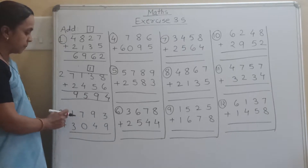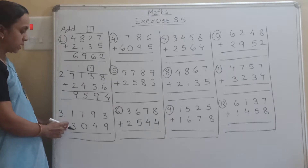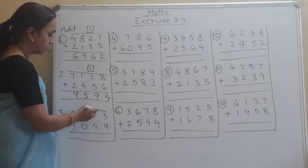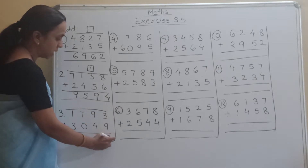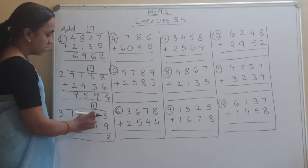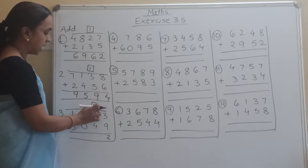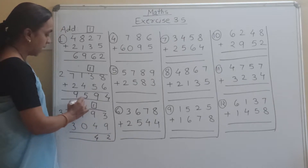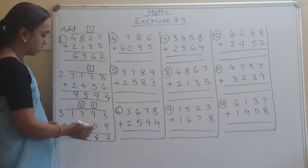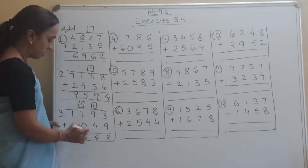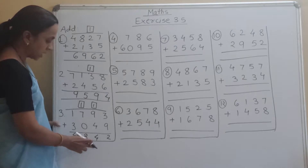Now see the third example: 1793 plus 3049. So 9 plus 3 is 12, carry 1. Write down 1 here. Then 9 plus 1 is 10, 10 plus 4 is 14. Write down 4, carry 1. Then 7 plus 1 is 8, 8 plus 0 is 8, 3 plus 1 is 4. So the answer is 4842.